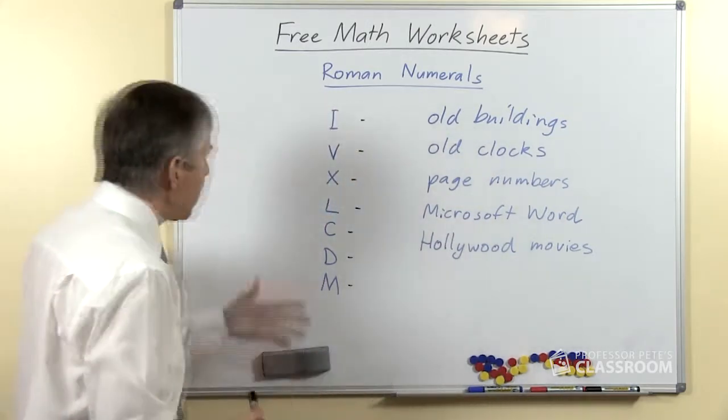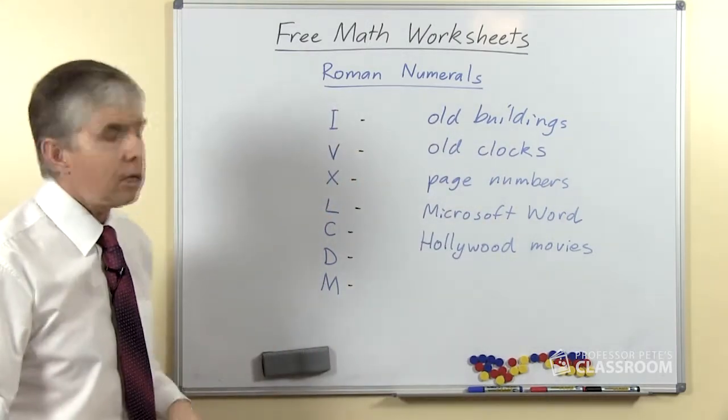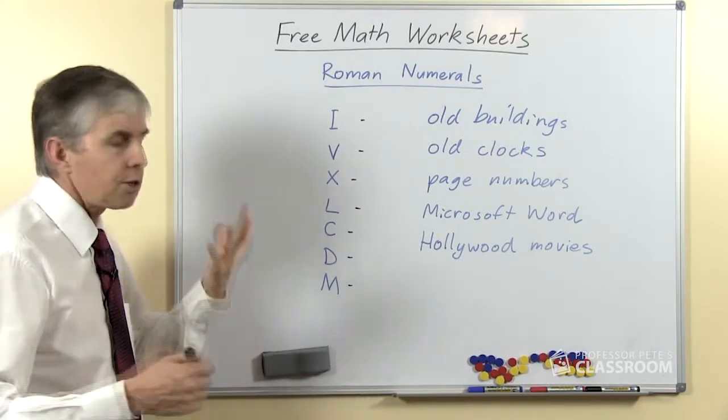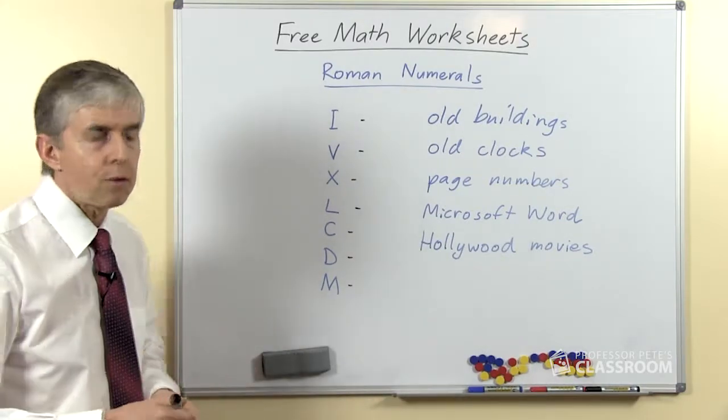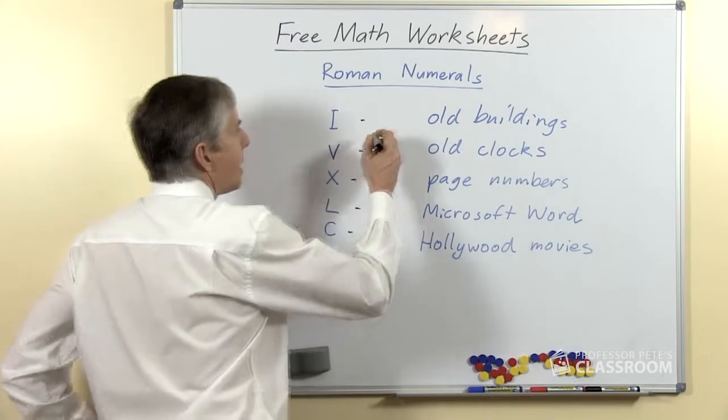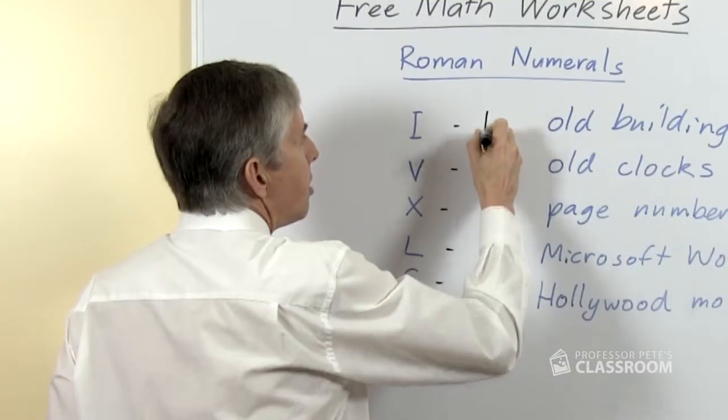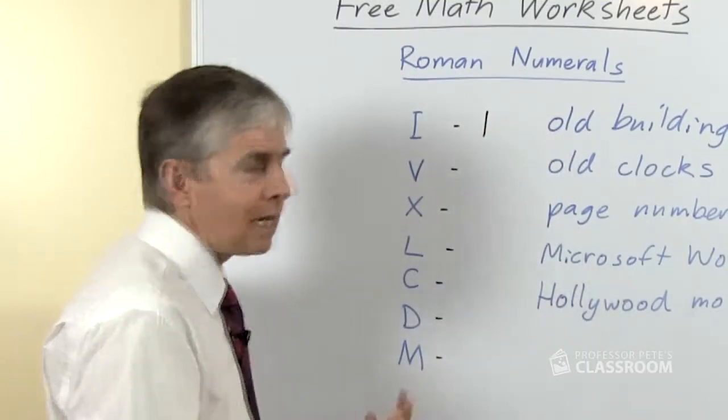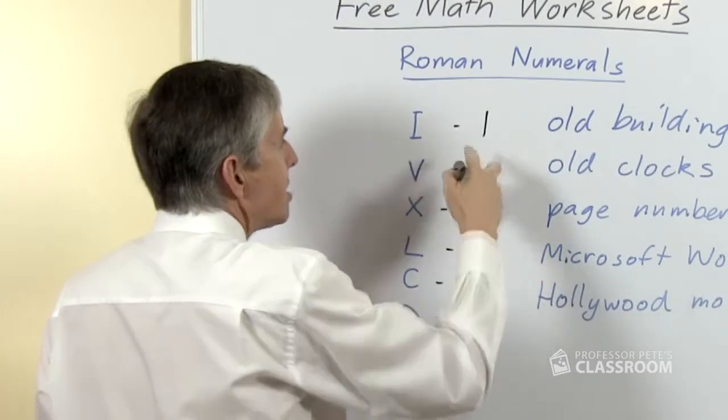Okay, so here are the symbols that they used—there were seven of them. I should say that we still use them if we want to use Roman numerals, and they have these values. The I represents 1, which is nice and easy because they both look quite similar.